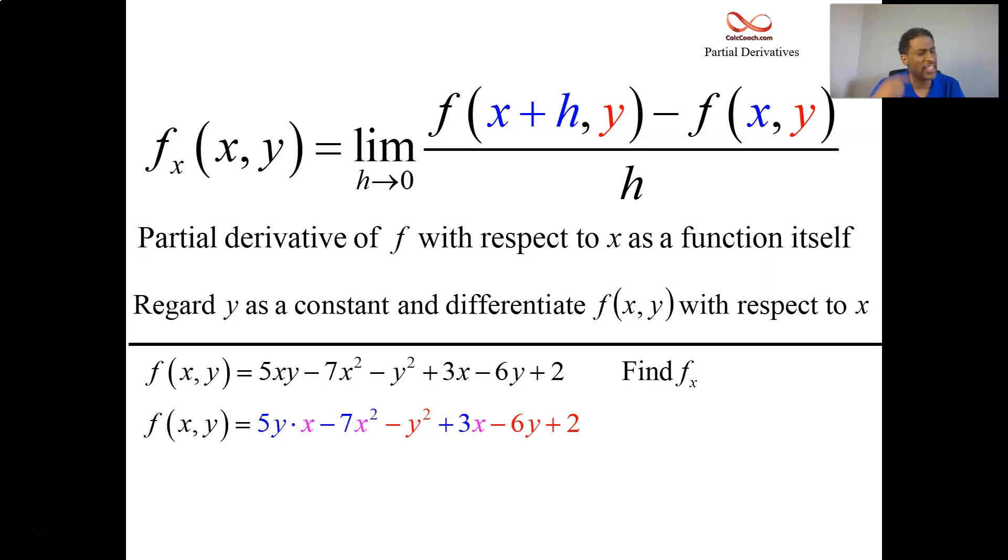The derivative of 5yx gets treated just like the derivative of 5x. The constant is the derivative, so the derivative of 5yx is 5y. If your term just has x's in it, then you do it like Calc 1's power rule, minus 14x.